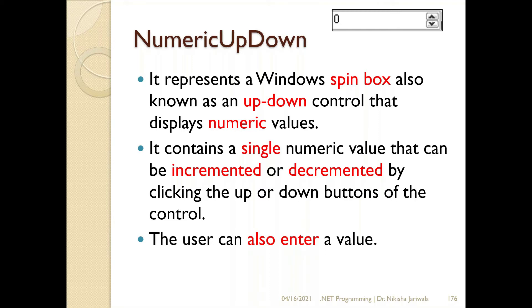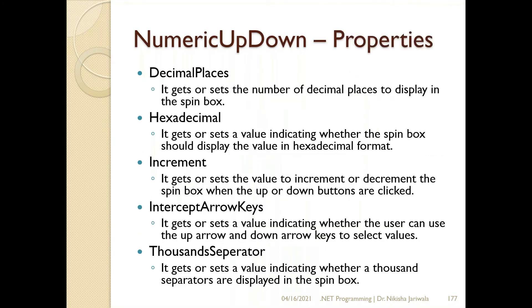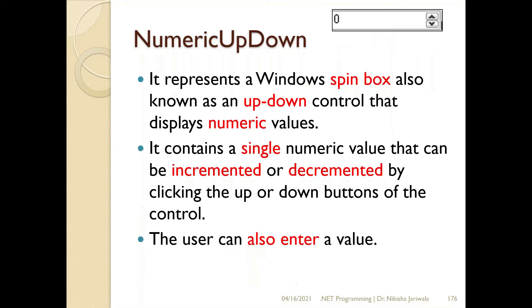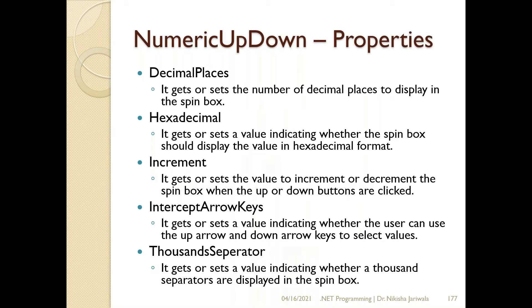The properties of the NumericUpDown control: 'DecimalPlaces' — if I want to display floating point numbers, how many decimal places do I want to display. 'Hexadecimal' — if I want to display values in hexadecimal format, I can use this property. 'Increment' — when I click the up or down button, how much should the value increment or decrement, e.g., plus one or plus two.